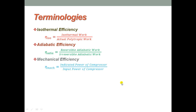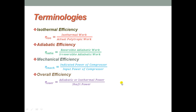The third efficiency is mechanical efficiency, defined as the ratio of indicated power of the compressor to the power input to the compressor. Next is overall efficiency, defined as the ratio of adiabatic or isothermal power to shaft power. This gives the overall efficiency of a compressor.